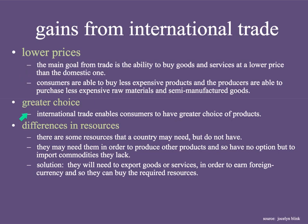The second gain is pretty obvious: greater choice. International trade enables consumers to have greater choice of products. For example, if you're really into the outdoors and you live in Chile, Doite is a reputable brand of outdoor camping gear — but it's not actually the best in the world. Many products from the United States, like Patagonia, North Face, or Mountain Hardware, and European companies are super good at making outdoor gear. So if you open up to international trade, your consumers are going to have access to a better choice in the products they buy.